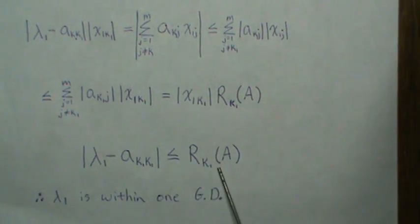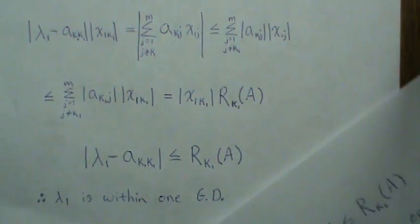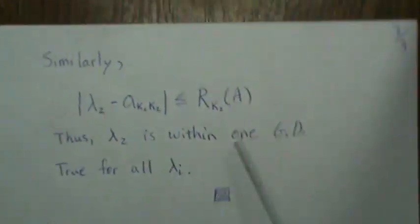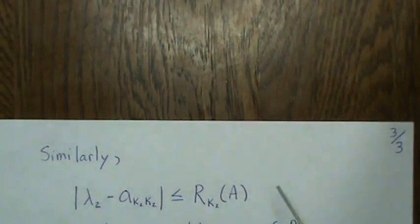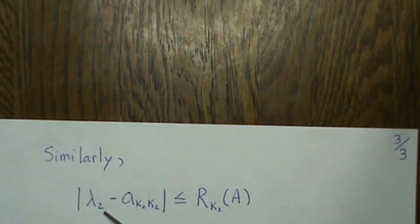Well, if we divide by this number here, we get this relationship, and that says the first lambda parameter is in one of the Gershgorin disks, the kk-th row of it. Well, that is just for the first eigenvalue and eigenvector.